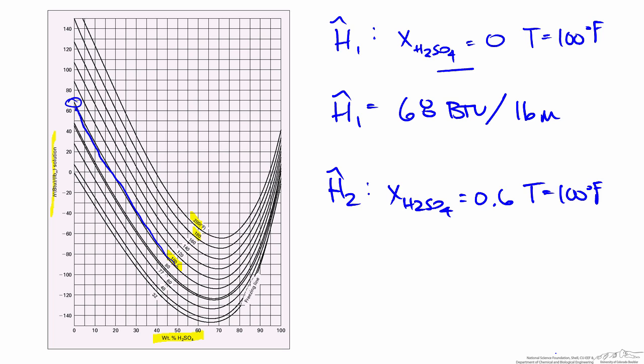Our second solution was a 60% H2SO4 solution, also at 100°F. We can follow the 100°F isotherm to x equals 0.6 to find our specific enthalpy, which is about at this point here. It's less than negative 100, so I'll use a value of negative 108.